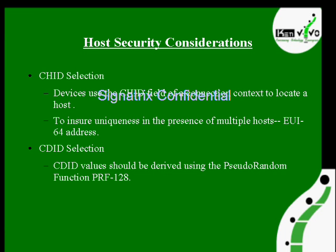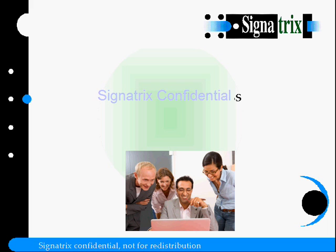Now from the host perspective, regarding security considerations: CHID — where CH indicates connection host, and ID indicates identification. For CHID selection, devices use the CHID field in the connection context to locate a host. To ensure uniqueness in the presence of multiple hosts, 64-bit addresses are used. For CDID selection, the CDID value should be derived using the pseudo-random function PRF-128 operator.